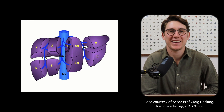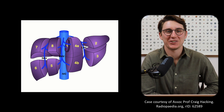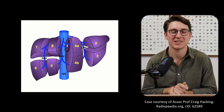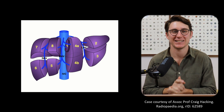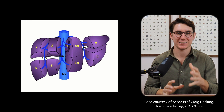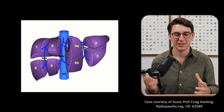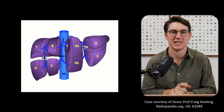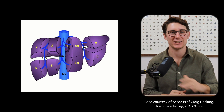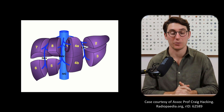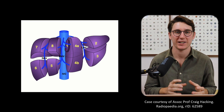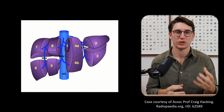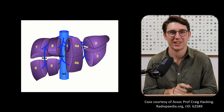Hello everybody and welcome back to another anatomy tutorial. Today I'm going to show you how to identify the different liver segments on a CT scan. We're going to first look at a diagram to understand how we separate the liver into the various segments, and then we're going to go to axial CT slices and I'll show you which structures you need to identify in order to figure out which segment of the liver you're actually looking at.